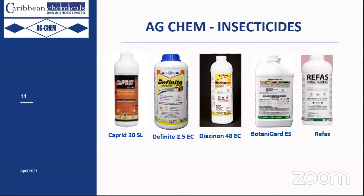Next is Definite, a contact insecticide with the active ingredient deltamethrin — can be used in rotation with Caprid to control whitefly, stink bugs, and leafhoppers. It is an EC formulation that turns white when mixed with water. Diazinon is also available for both drenching and foliar application, controlling a wide range of pests including thrips, whitefly, aphids, and leaf miners — both hard-bodied and soft-bodied insects.